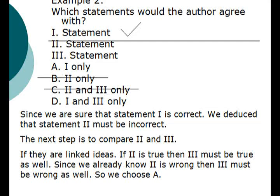Revisiting example two, our starting point was that we are sure statement one is correct. Since statement one is correct, we cross out answer choices B and C. Through deduction, we deduce that statement two must be incorrect. Now comparing statements two and three, if we decide they are linked ideas — that is, if two is true then three must be true as well — but we already know statement two is wrong, therefore three must be wrong as well since they are linked ideas. So in this case, we choose answer choice A.